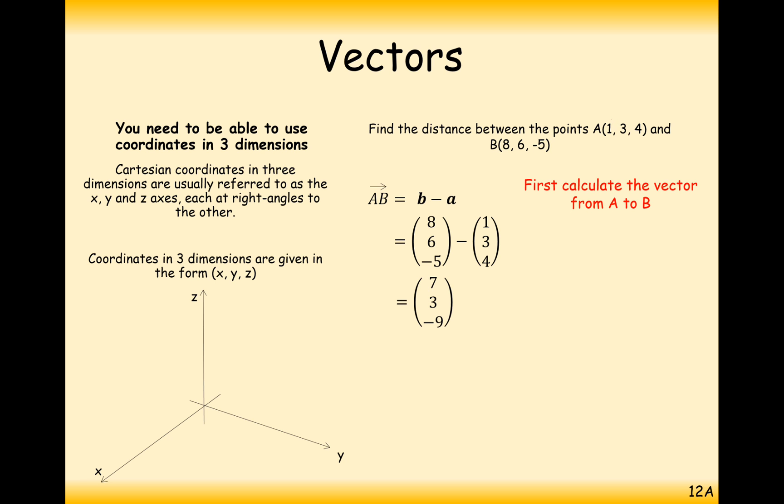You can effectively see here, how do you get from 1 to 8? You add 7. How do you get from 3 to 6? You add 3. And how do you get from 4 to minus 5? You subtract 9. Then we just need to use 3D Pythagoras. So 7 squared plus 3 squared plus minus 9 squared will give us the modulus of AB, which is square root of 139, or 11.8 to 1 decimal place.